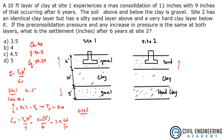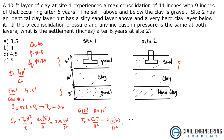Now let's go to Site 2. Here h = 10 feet. We're going to rearrange the equation to solve for tv: tv = cv × t / h². Plugging in: tv = 2.5 × 6 / 10² = 0.15. If we find tv, we can go to Table 40.1 and get uz — the degree of consolidation — and then use that as a fraction of the maximum to get the actual settlement after 6 years.